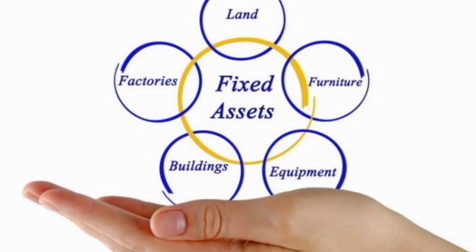Assets are classified into two types: fixed assets and current assets. Fixed assets are those assets which a company holds for a long period of time and uses to manage its operations and conduct the business. Examples of fixed assets include furniture, factories, buildings, and equipment.